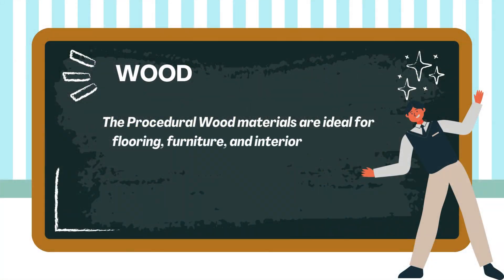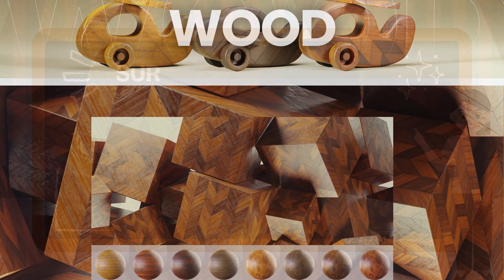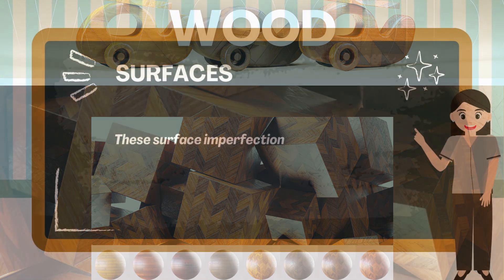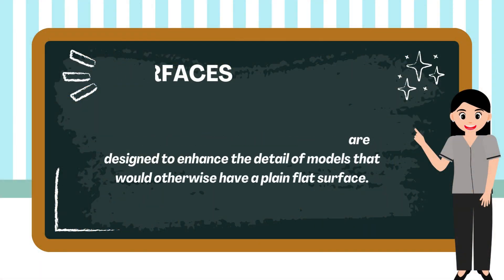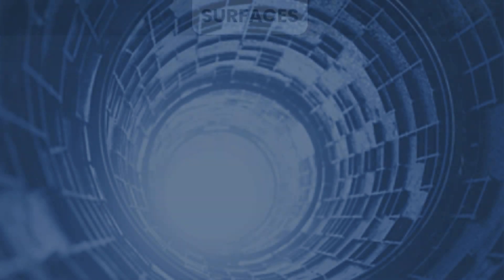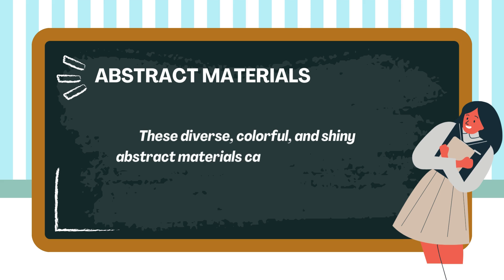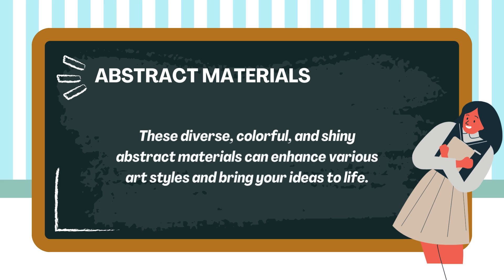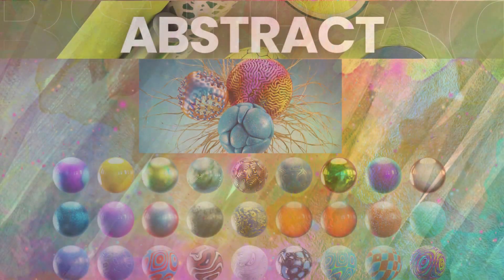The procedural wood materials are ideal for flooring, furniture, and interior elements. With customizable components, these materials will meet your requirements perfectly. Surface imperfection materials are designed to enhance the detail of models that would otherwise have a plain, flat surface. The diverse, colorful, and shiny abstract materials can enhance various art styles and bring your ideas to life.